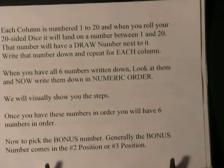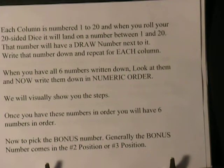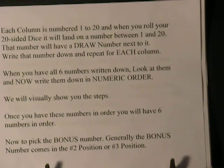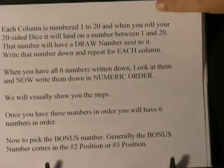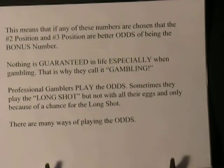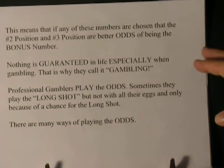We will visually show you the steps. Once you have these numbers in order, you will have six numbers in order — except for the bonus ball, which generally runs high and low. To pick the bonus number: generally the bonus number comes in the number two or three position if you're just using a six number format. We're going to be rolling separately for the bonus number, so we won't think of the six numbers as a position number. We're using just the bonus number, so we'll exclude that for right now.